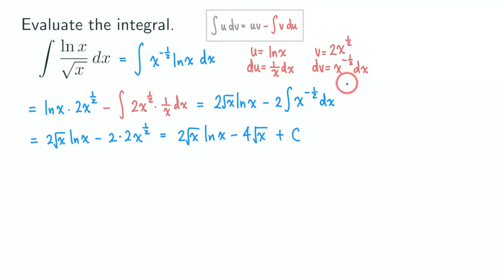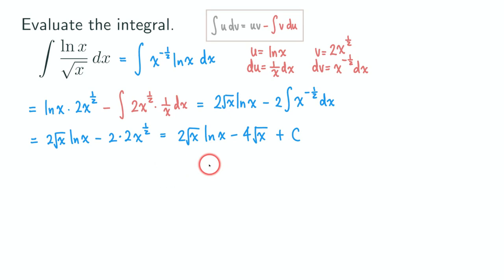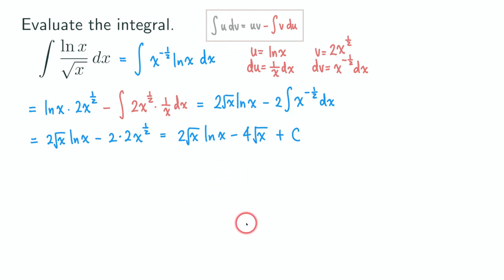That's it for this one. We only needed to do integration by parts one time, so that's not too bad. Functions involving ln and a power of x are usually pretty easy this way. We can use the same idea to find the antiderivative of ln(ln(x)) next time. I also want to do this same problem with the tabular method next time and see how it compares. See you next time — thanks for watching.